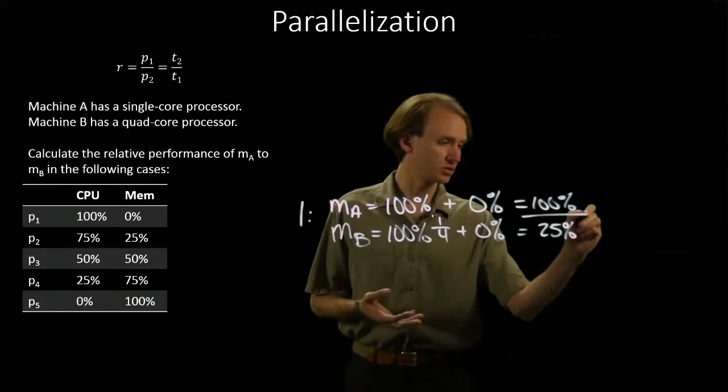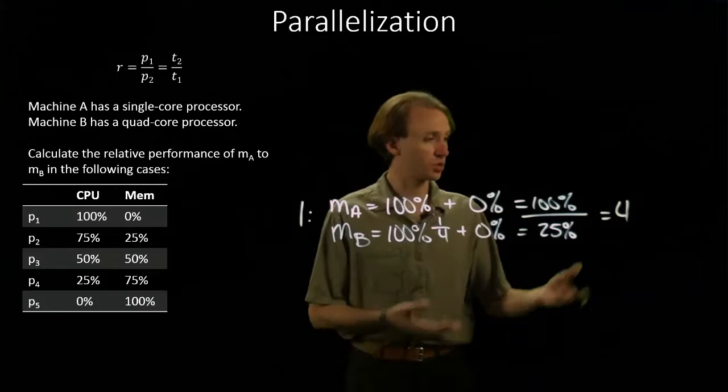Alternatively, I can put them into a relative performance ratio, and I can see that Machine B is four times faster than Machine A.